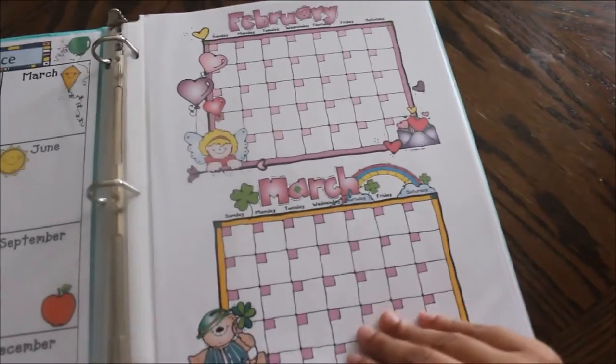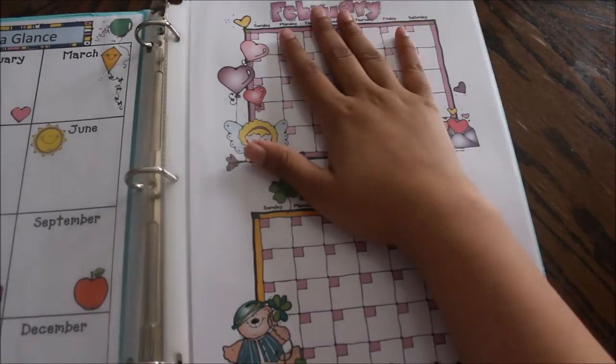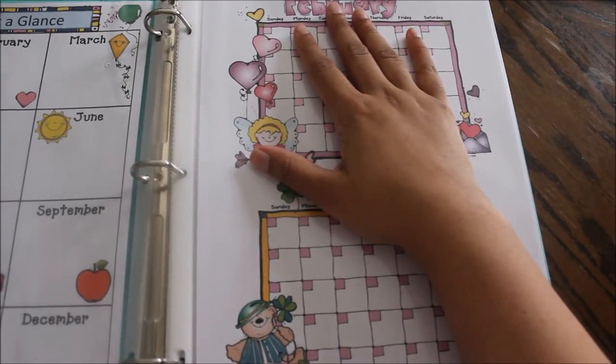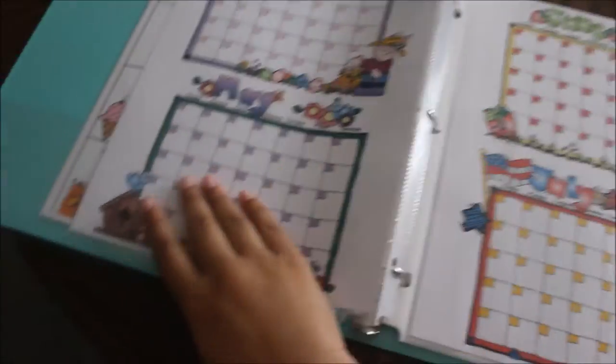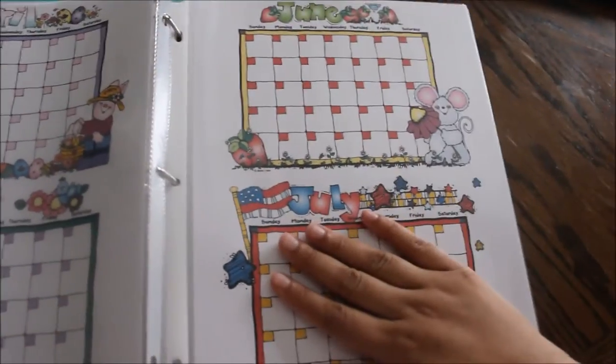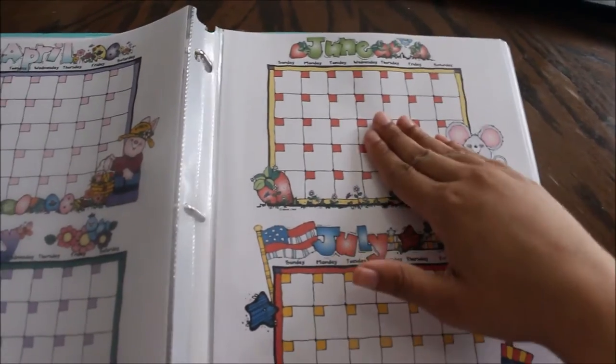Next over here is the months at a glance. So I have February, March. We're not even going to pay attention to February because it's the middle of March. You can fill in the dates. We have April, May, June, July.